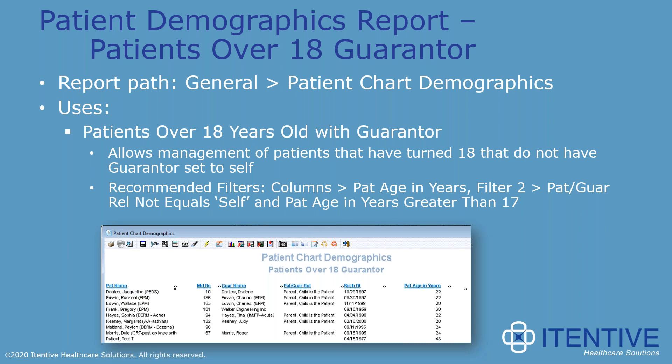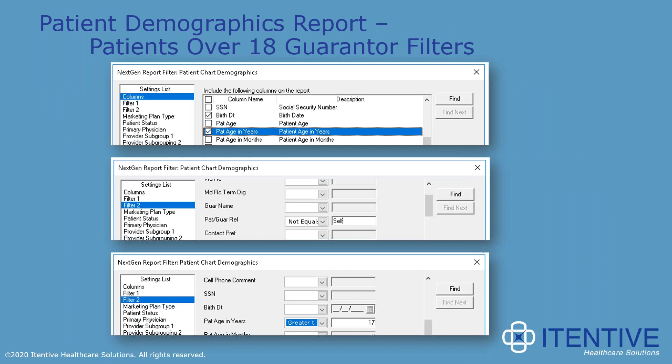To set up this report: on the columns tab, check off patient age in years. We're only interested in patients who are not marked as their own guarantors, so set patient guarantor relationship to not equal self. Finally, set patient age in years to greater than 17 — using 17 so that you also capture patients who are 18. As a user runs this report periodically, they can use it to update the guarantor to self for any patients who have recently turned 18.